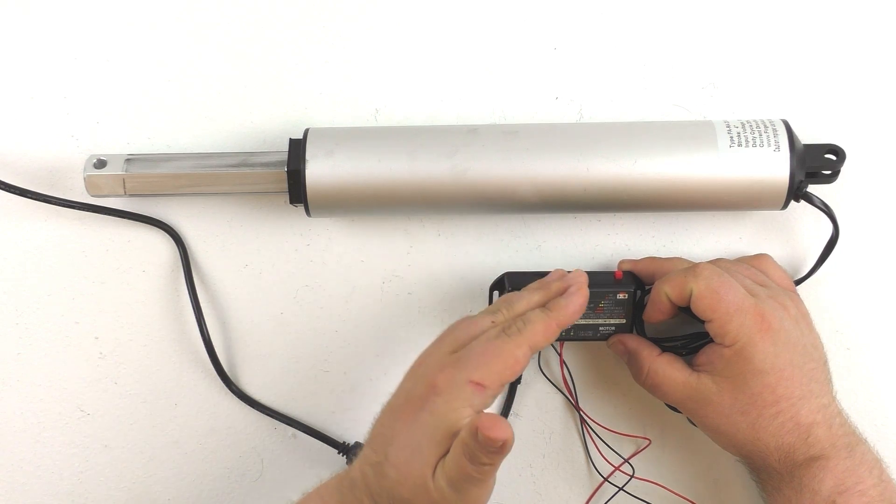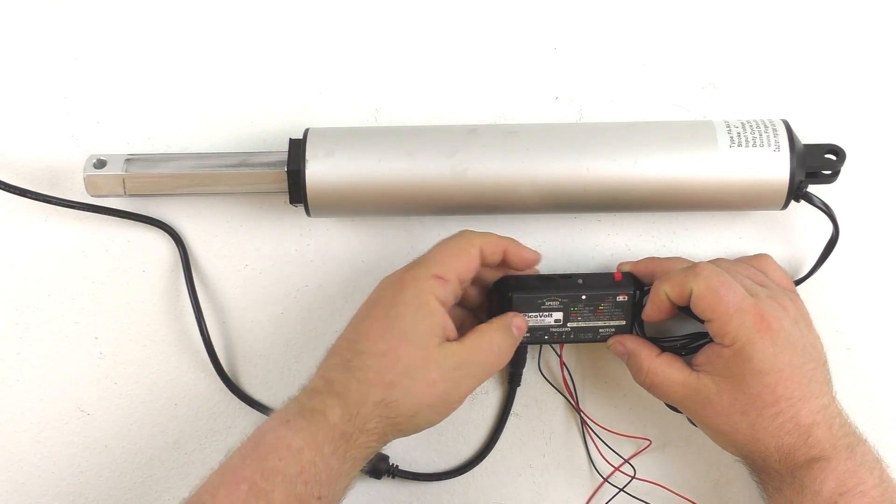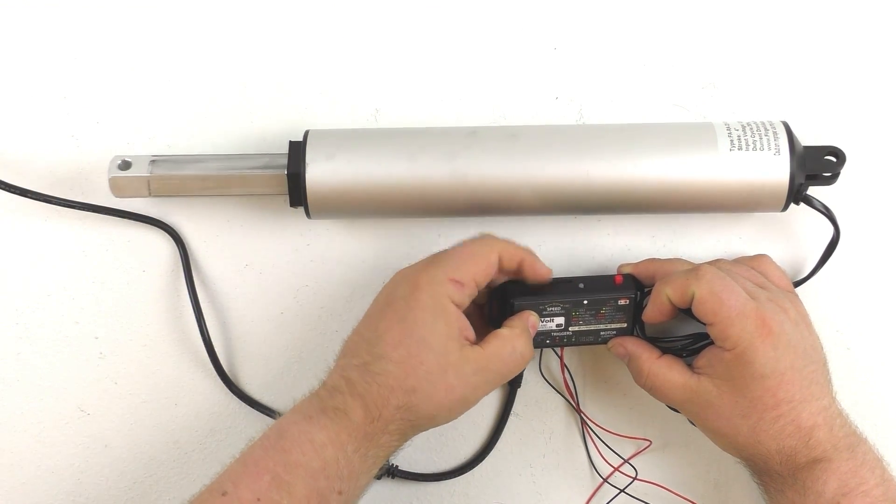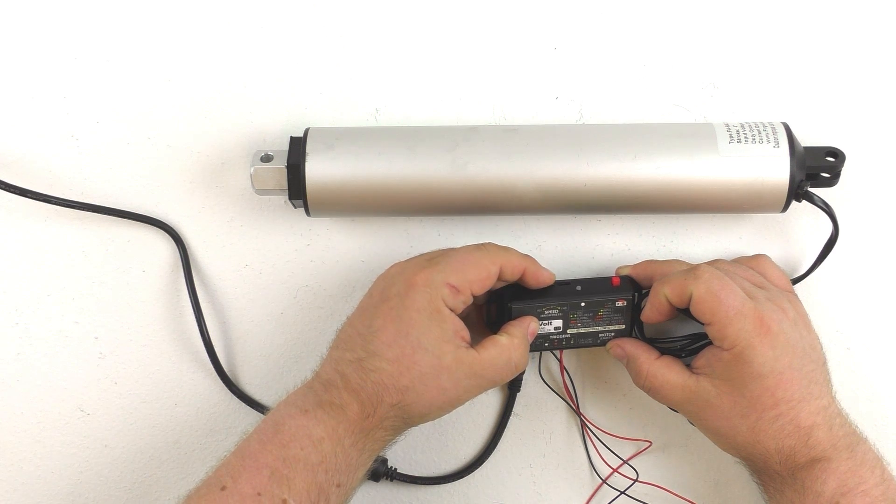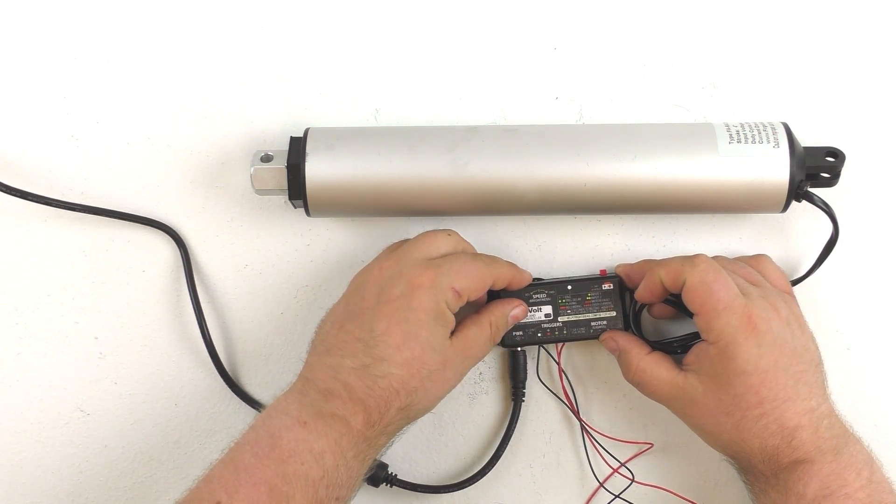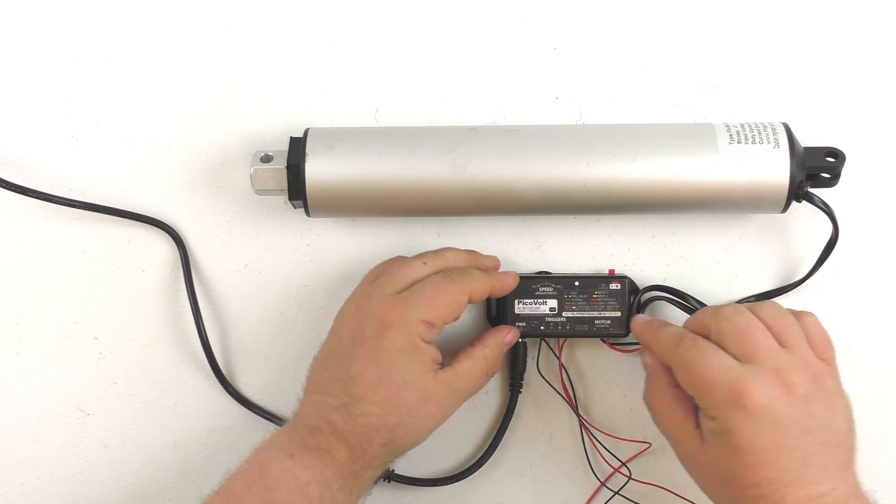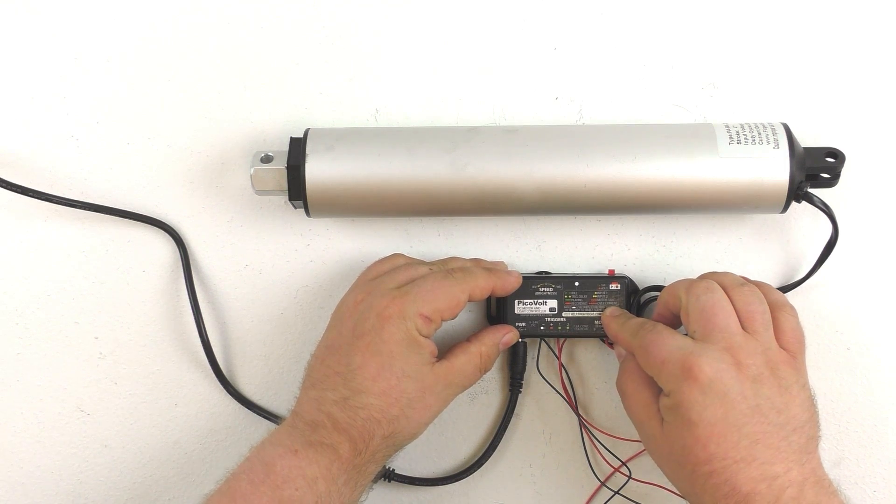Now as soon as we release the record button you notice that the actuator extended that's because the dial was all the way to the left so we can just pull it back and recenter it there's a little dot here that shows you the center position of the dial and now we can actually record our animation for input one.